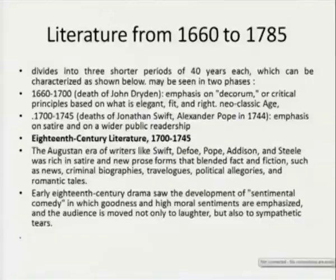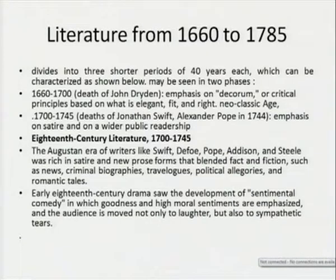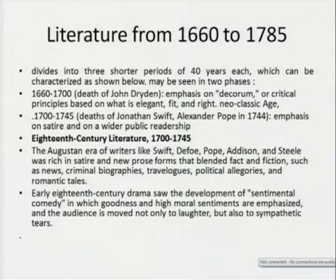These are new genres of literary representation which came into existence — political allegories and romantic tales. Early 18th century drama saw the development of sentimental comedy, where goodness and high moral sentiments are emphasized, and the audience is moved not only to laughter but also to sympathetic tears. Some of the great figures of restoration literature from 1660 to 1700 include Dryden, Butler, Wycherley, Congreve, Bunyan, and Evelyn. John Dryden was the greatest writer of the age; he voiced the general complaint that in his prose and poetry he was drawing the outlines of a new art, because the passion of the Elizabethans and the purpose of the Puritan age somehow had no effect upon this new age. He moaned that he had no teacher to instruct him.